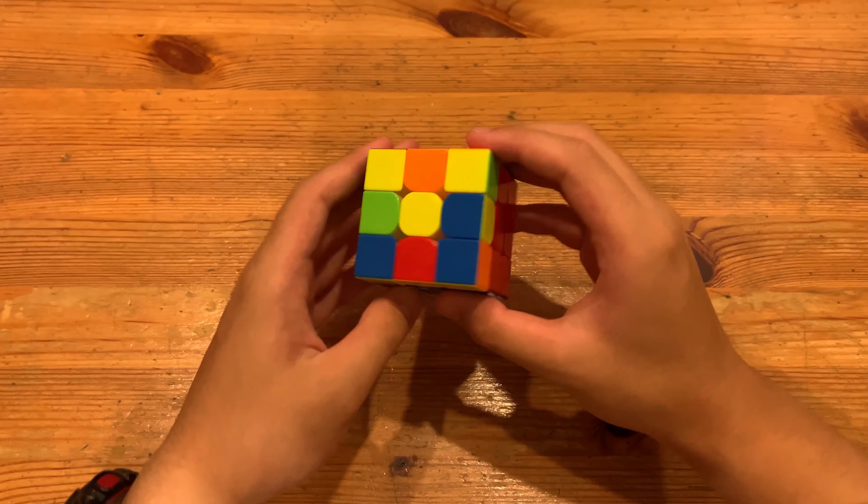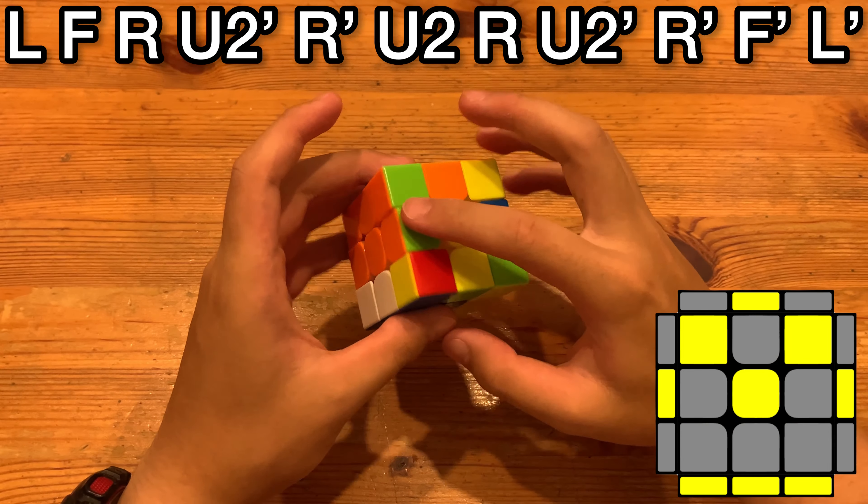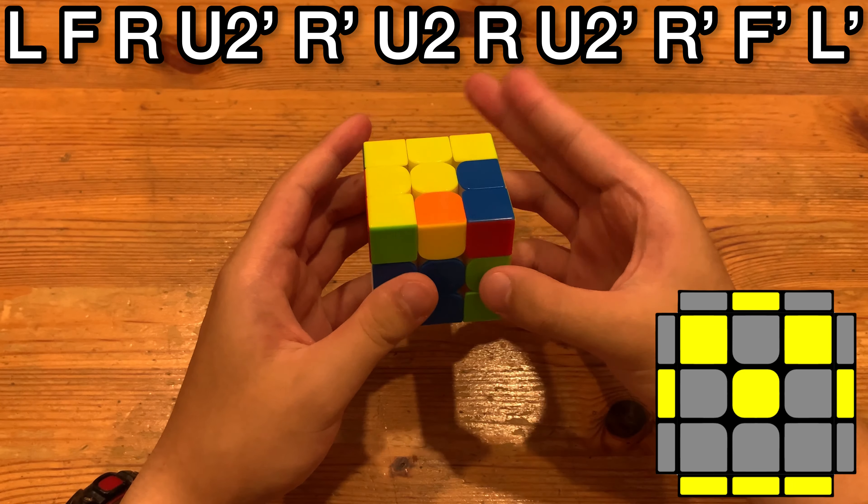Anyways, here's the alternative algorithm. So you have it at this angle instead, and you do L, F, insert this into here, so R, U2, R', and then U2,